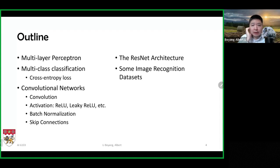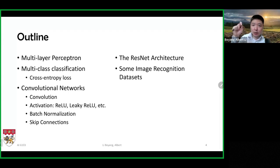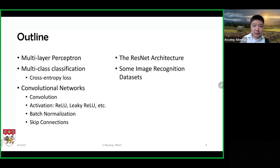We will also talk about how to extend the binary classification method we discussed last time to a multi-class classification method. Comparing binary classification, where there are only two possible classes, in multi-class classification there could be more than two choices — for example, 100 classes — and at any moment each input still belongs to a single class only.